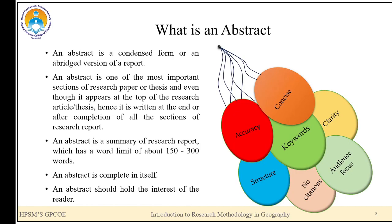What is an abstract? An abstract is a condensed form or an abridged version of a record. It is one of the most important sections of a research paper or thesis, and even though it appears at the top of the research article or thesis, it is written at the end — after completion of all sections. An abstract is a summary with a word limit of about 150 to 300 words, is complete in itself, and should hold the interest of the reader.